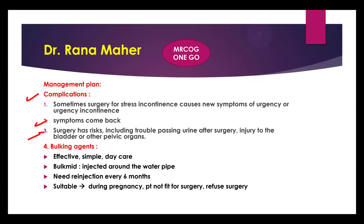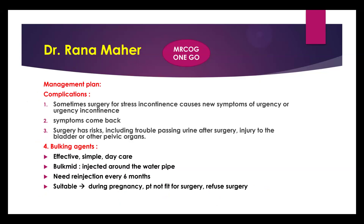Bulking agents are option four. We use Bulcamid, injected around the urethra in three areas. It is a minimally invasive daycare procedure — not surgery — taking around 30 minutes. It is effective, simple, and suitable when the patient refuses or is unfit for surgery. The main disadvantage is the need for re-injection every six months.